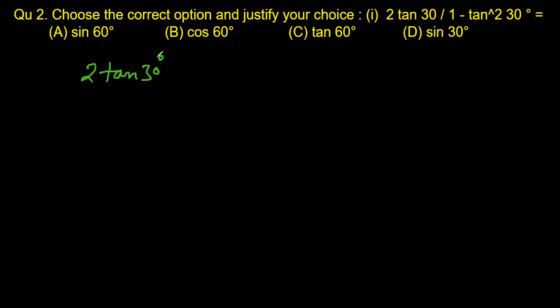2 tan 30 degree divided by 1 minus tan square 30 degree. The value of tan 30 is 1 over square root 3.